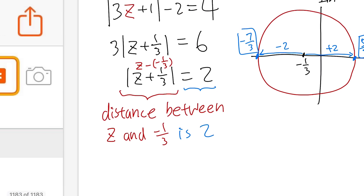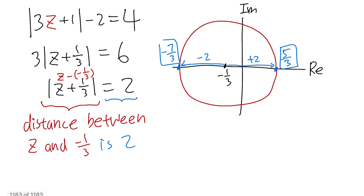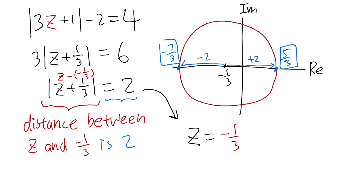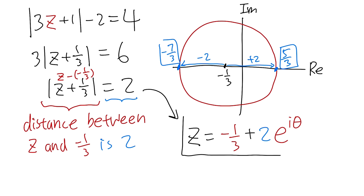Let's talk about how Wolfram Alpha gets its answer — it's actually not so bad. Once we know it's a circle, we can write z as follows: start with the center, negative one-third, then add the radius 2 multiplied by e to the i·θ. Wolfram Alpha uses n, but n usually denotes integers, so θ is better in my opinion. The e to the i·θ part comes from Euler's formula, which represents cosine θ plus i times sine θ.